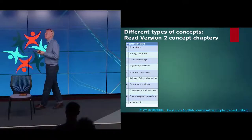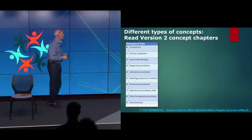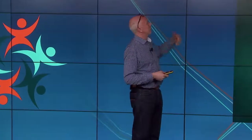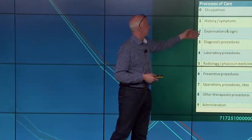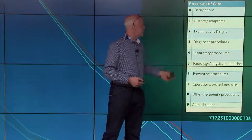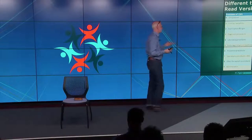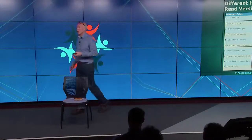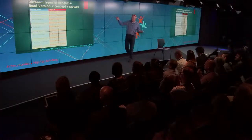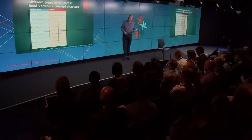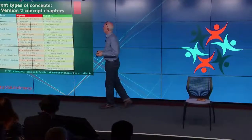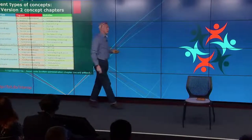What kind of information are we encoding? Taking an example from Read Version 2, which the majority of UK primary care systems use today — we have different kinds of information held there: occupations in chapter 0, examination signs 246, blood pressure, laboratory procedures 42 — perhaps glycosylated haemoglobin. Total hip replacement in chapter 7 and administrative codes in chapter 9. Read Version 2 also handles medication internally in chapters with lowercase initial codes.